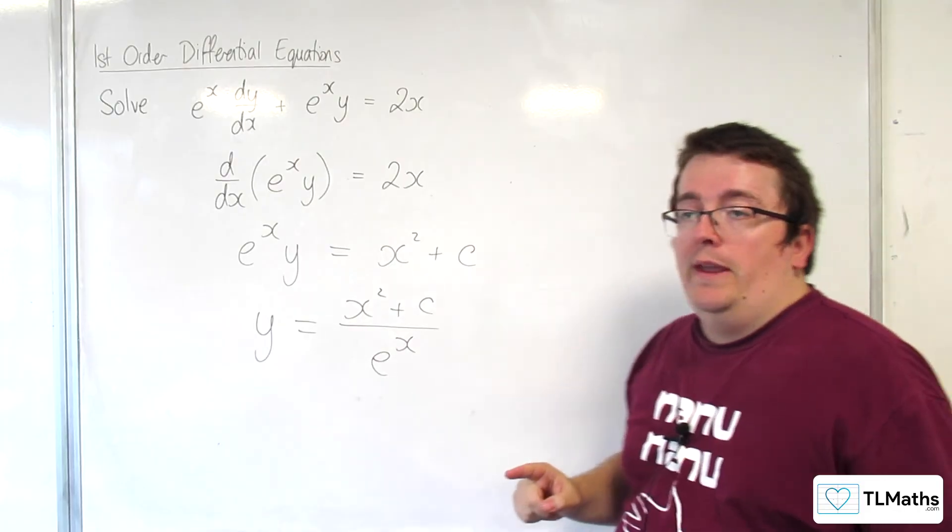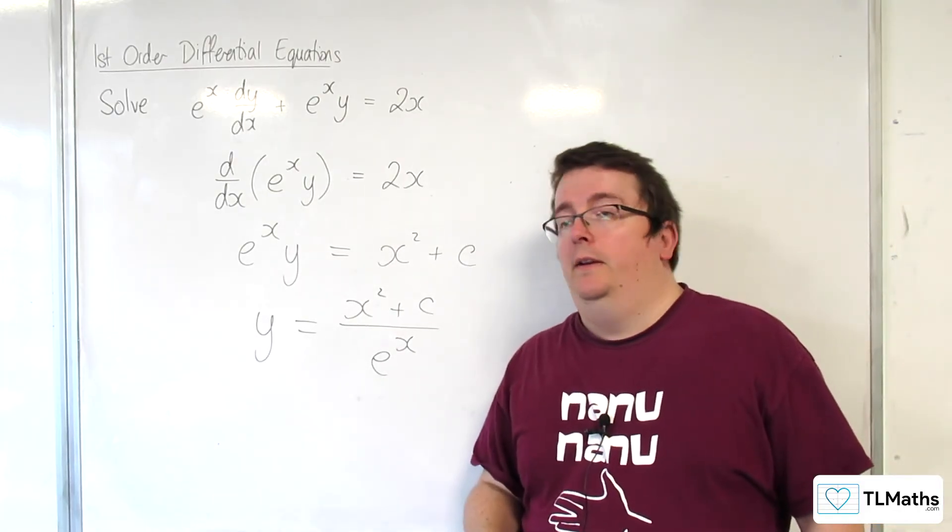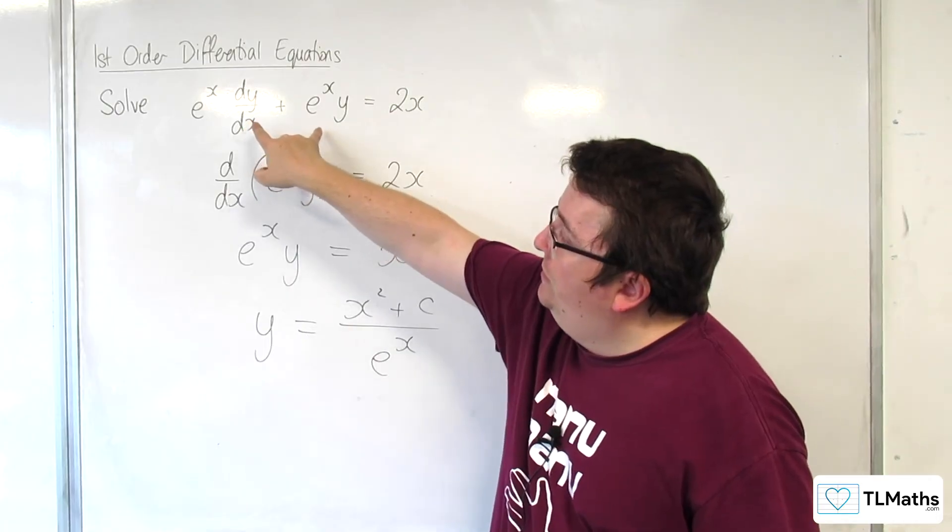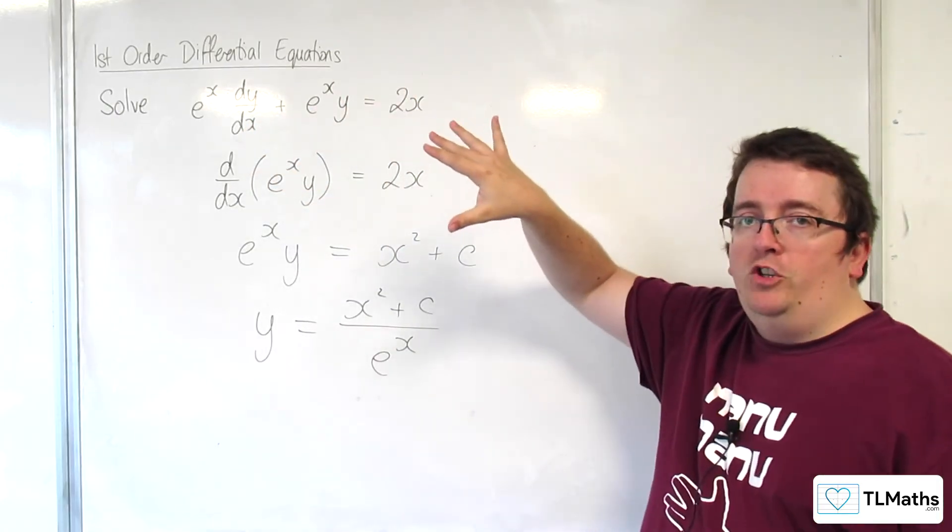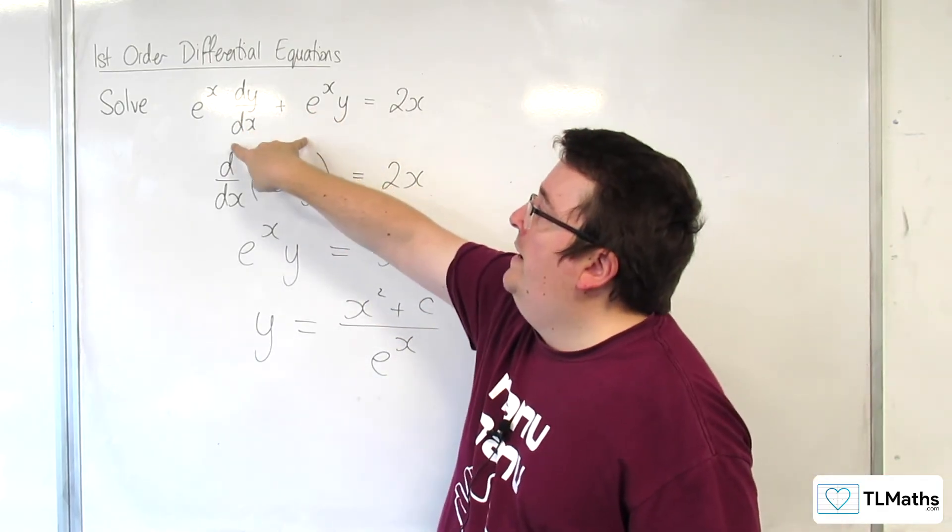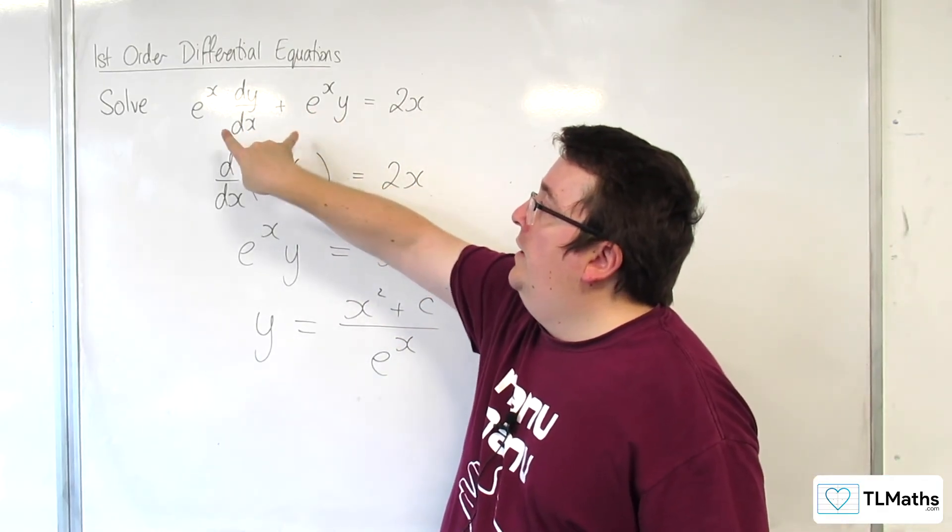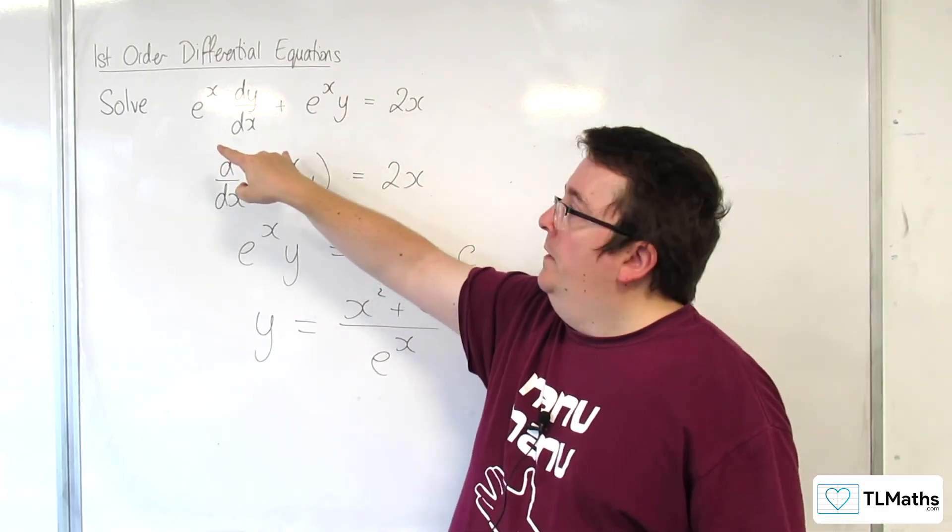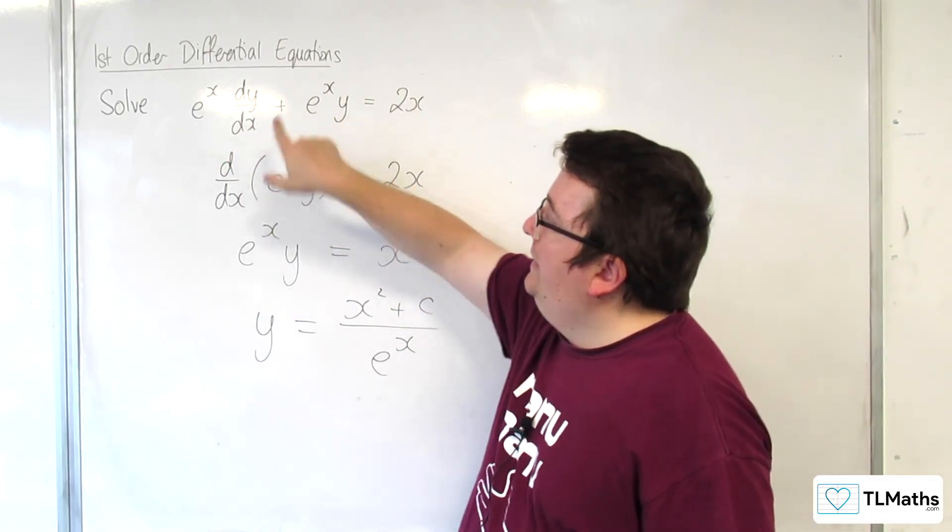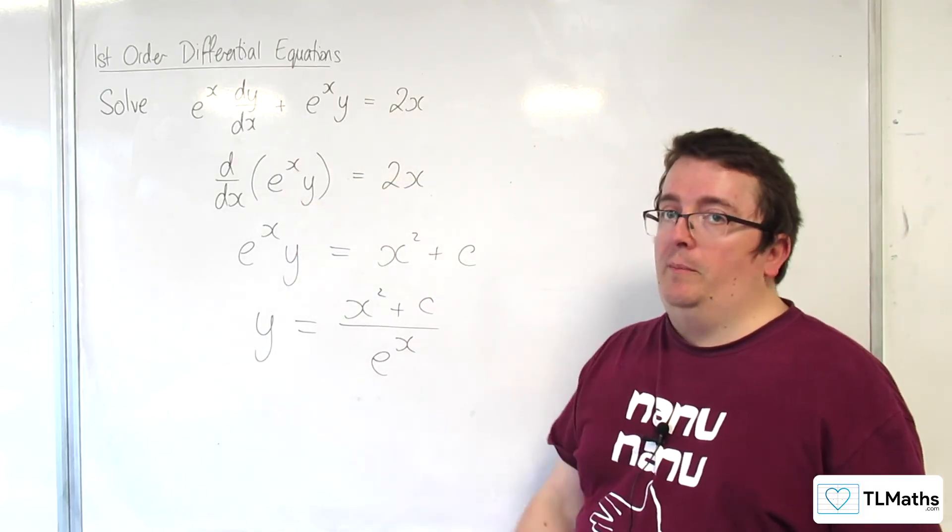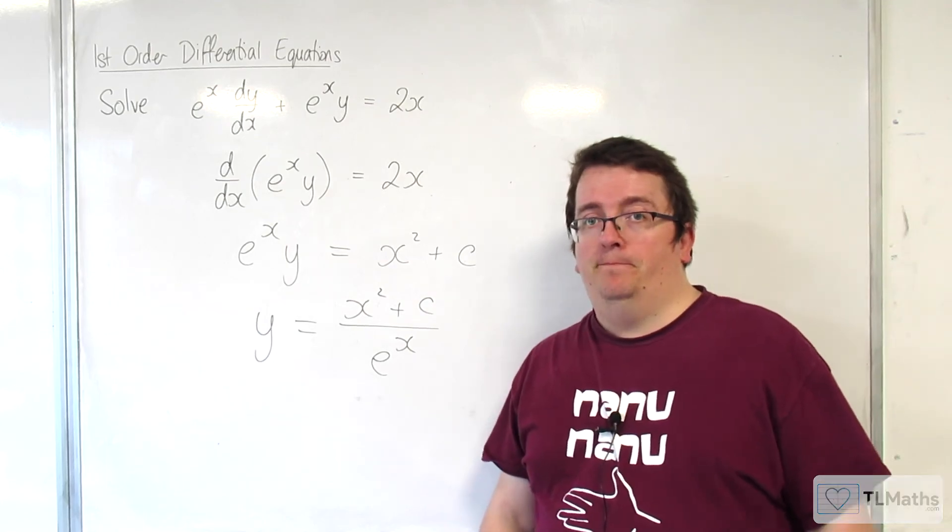So, actually, what we're doing here is we are spotting that we can write that left-hand side of the differential equation. It might require a little bit of rearrangement initially. But this one didn't. Look at that left-hand side. Is it the product rule of this e to the x times y? We're going to take a look at another example, which is very similar to this, in the next video.